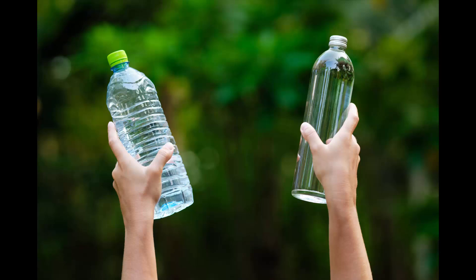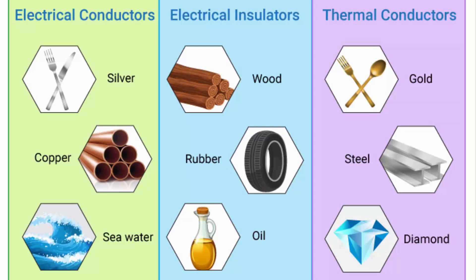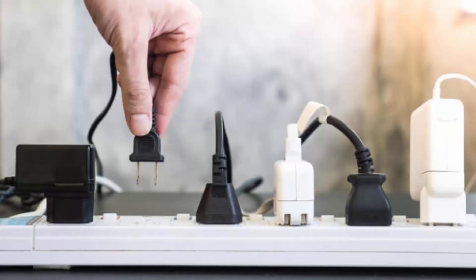Metals are good conductors of heat. Silver is the best conductor of heat. Non-metals such as glass and plastic are not good conductors of heat. Substances can also conduct electricity. Materials and substances that are able to conduct electricity are called electrical conductors. The ability to conduct electricity is a property of materials and substances. You should already know that metals conduct electricity — but do other substances also conduct electricity?